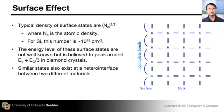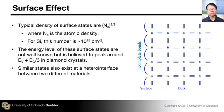These dangling bonds and incomplete bonds produce energy levels that are located within the band gap, just as bulk defects and impurities produce energy levels within the band gap. The nature of these defect states — surface states — is not well known in general.